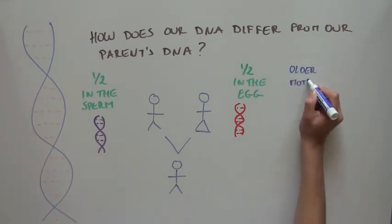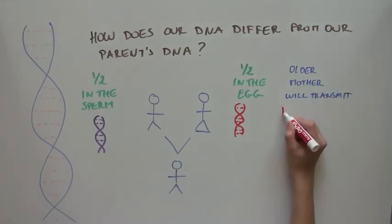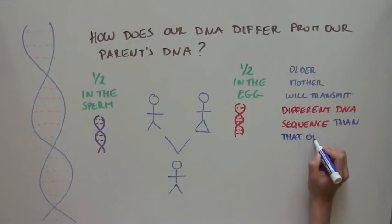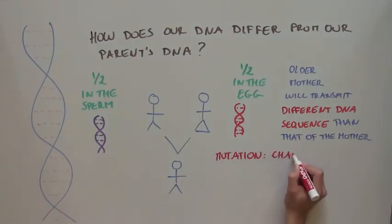We know that as women age, the egg can, by mistake, give to the child a different DNA sequence than that of the mother. This is called a mutation, which is a change in the DNA sequence.